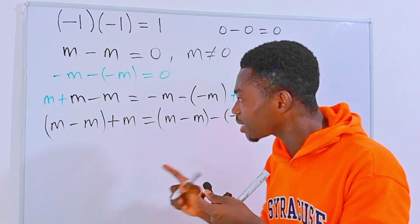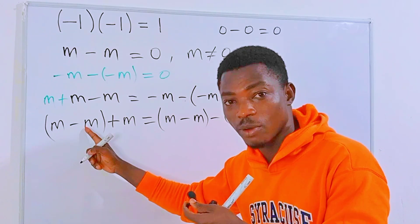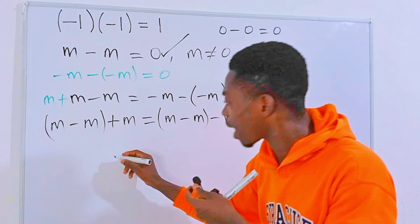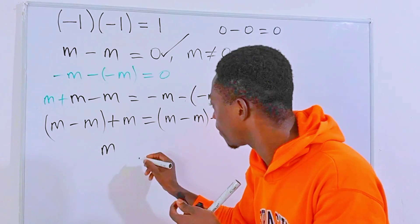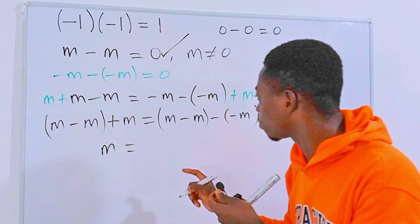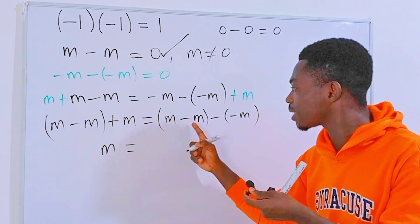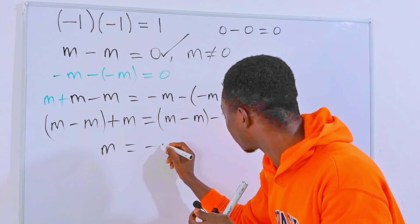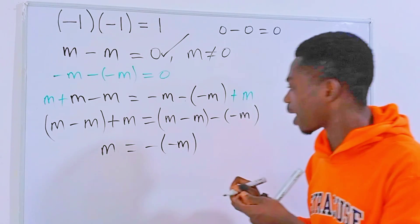Now if we put this in parenthesis and then this in parenthesis as well, we can clearly see that m minus m over here is equal to zero from this equation. So on the left hand side we will be left with only m, and in the same way m minus m is also zero, so here we will be left with minus minus m just like that.